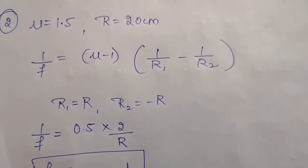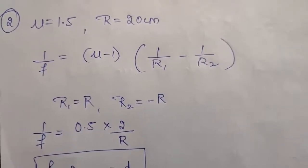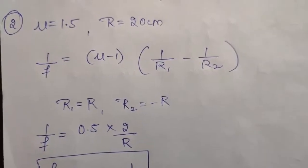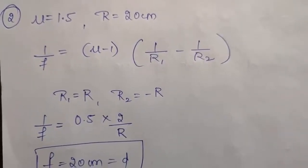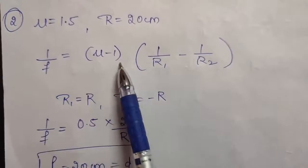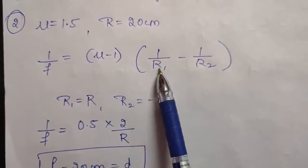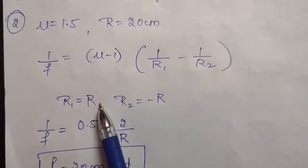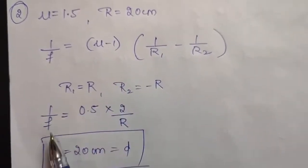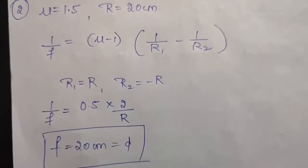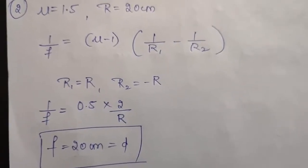As you know, if the incident rays are parallel to the axis they will converge on the focal length, or you can say they will converge at the focus of the lens. So we will be calculating f, and that will be nothing but d. So 1 upon f will be equal to (mu minus 1) into (1 upon r1 minus 1 upon r2). For an equiconvex lens, r1 is positive (+r) and r2 is negative (-r). By putting these values, 1 upon f comes to be 0.5 into 2 by r, giving f = 20 centimeters. That means the value of d is 20 centimeters.